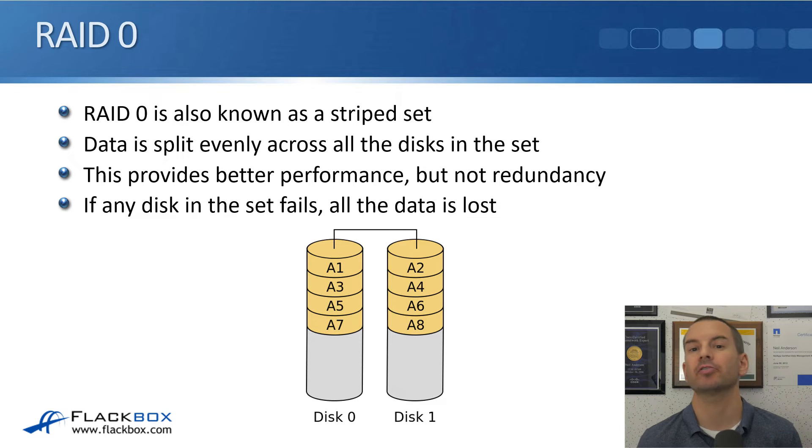Our different RAID levels. First one to cover is RAID 0, which is also known as a striped set. With RAID 0, the data is split evenly across all the disks in the set. That provides better performance, but you don't get any redundancy. If any disk in the set fails, all the data is lost. This is actually less reliable. It gives you less resiliency even than if you're using a single disk, because if you've got two disks or more, then it's more likely that one of them is going to fail. But it does give you better performance.